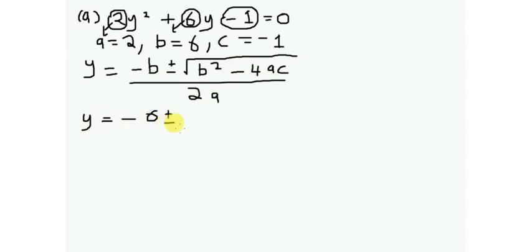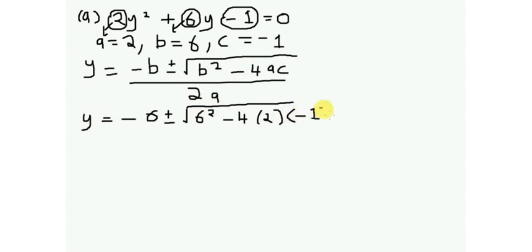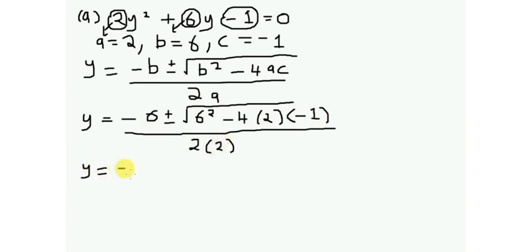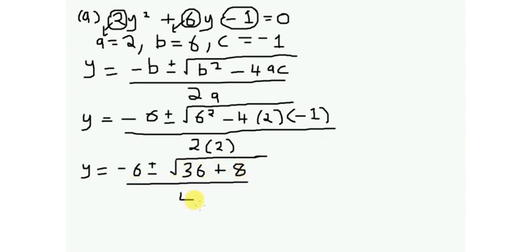Substituting the values: y equals negative 6 plus or minus the square root of 6 squared minus 4 times 2 times negative 1, divided by 2 times 2. That gives y equals negative 6 plus or minus the square root of 36 minus 4 times 2 times negative 1, divided by 4.